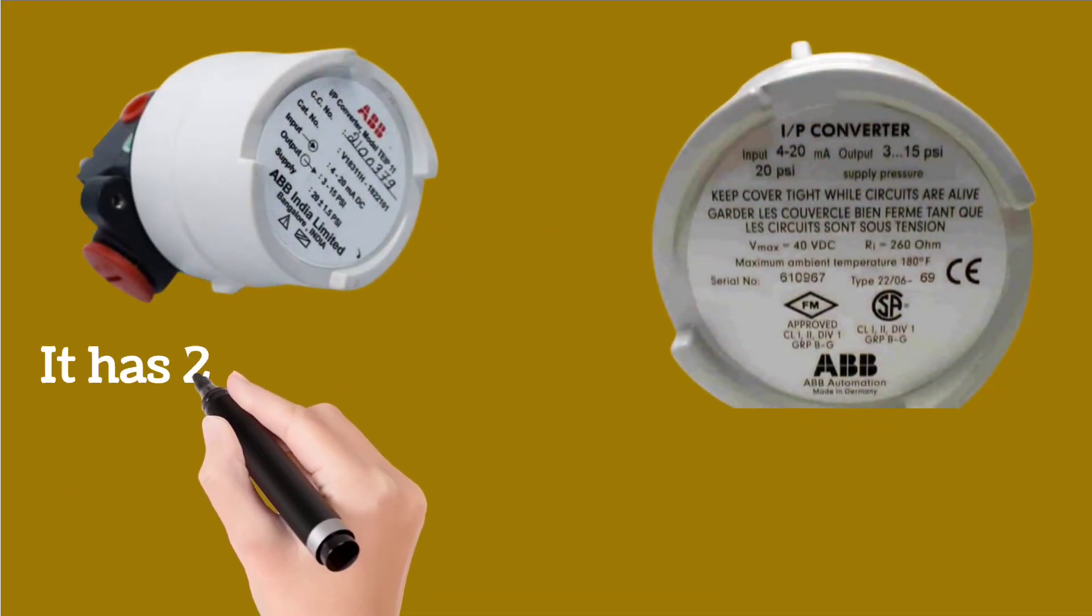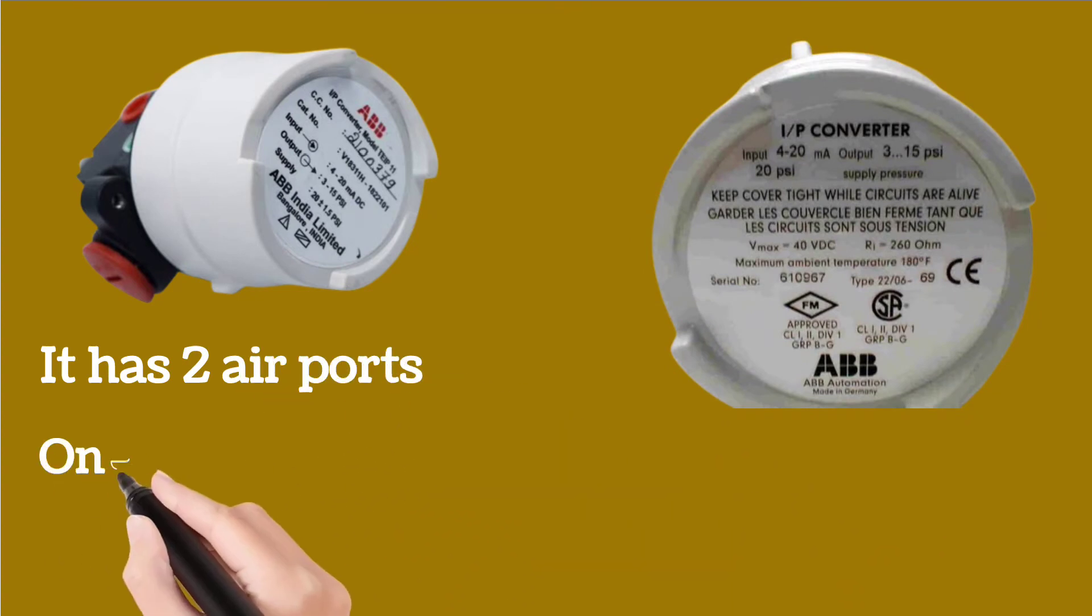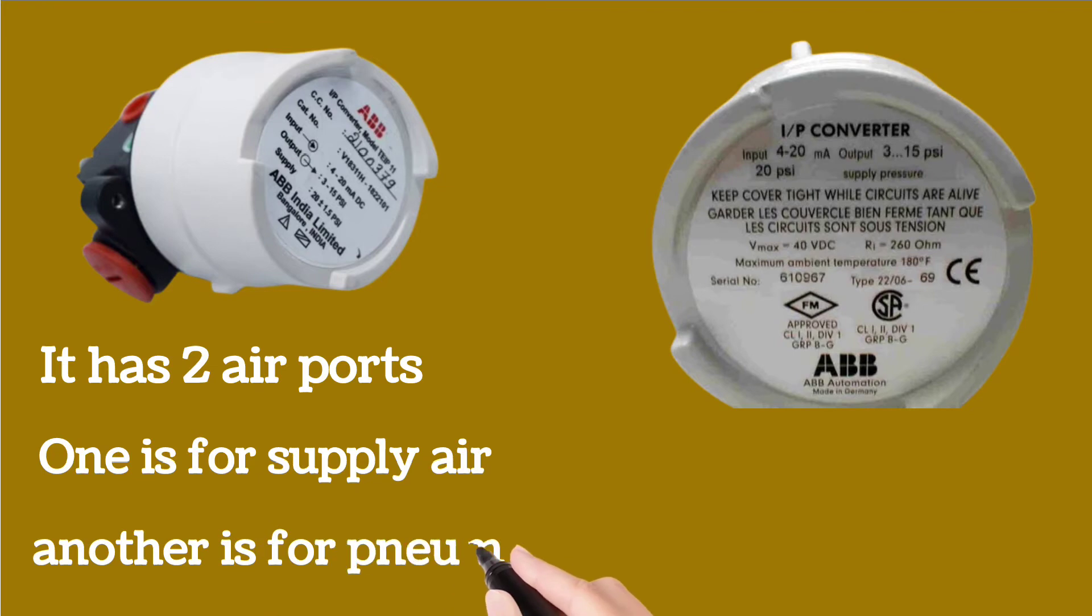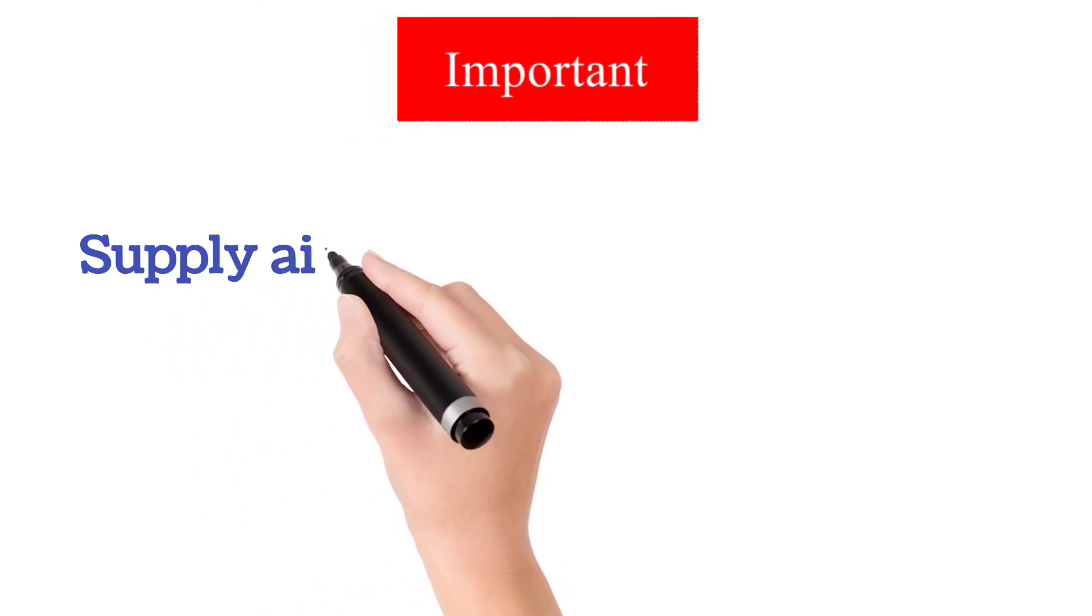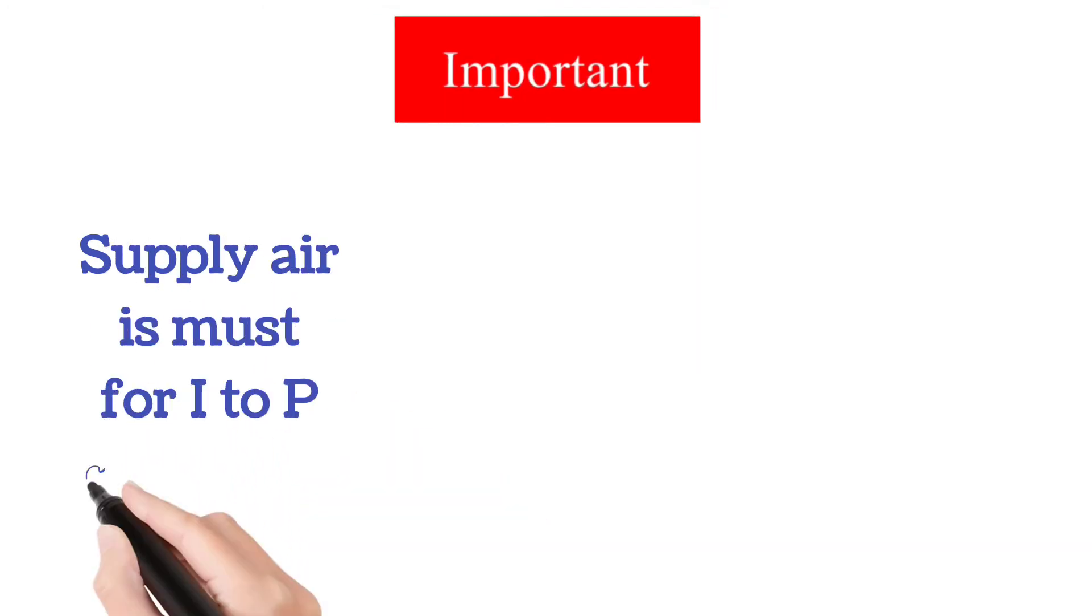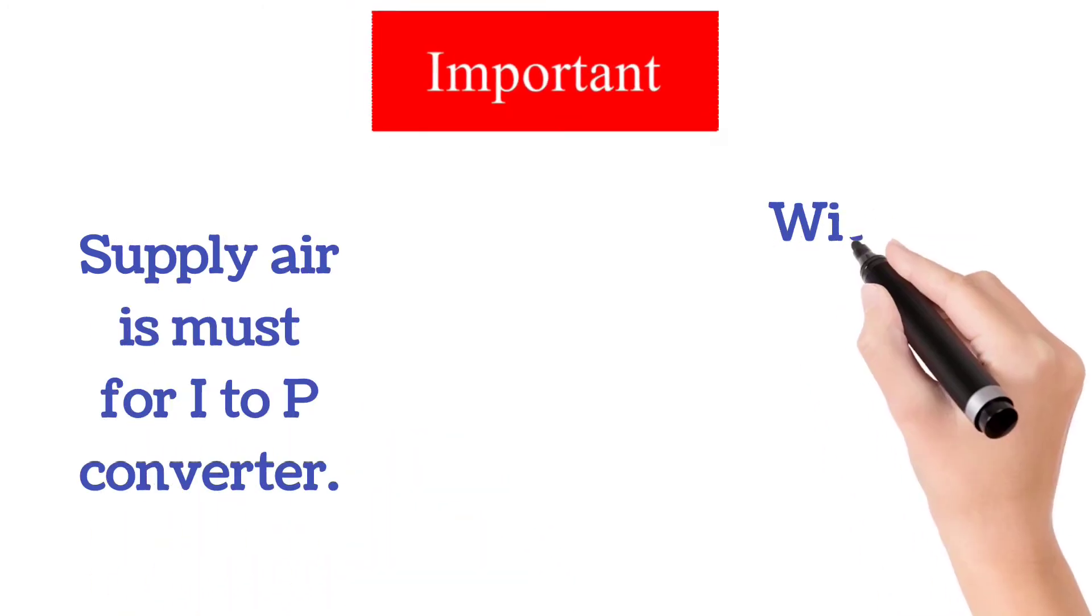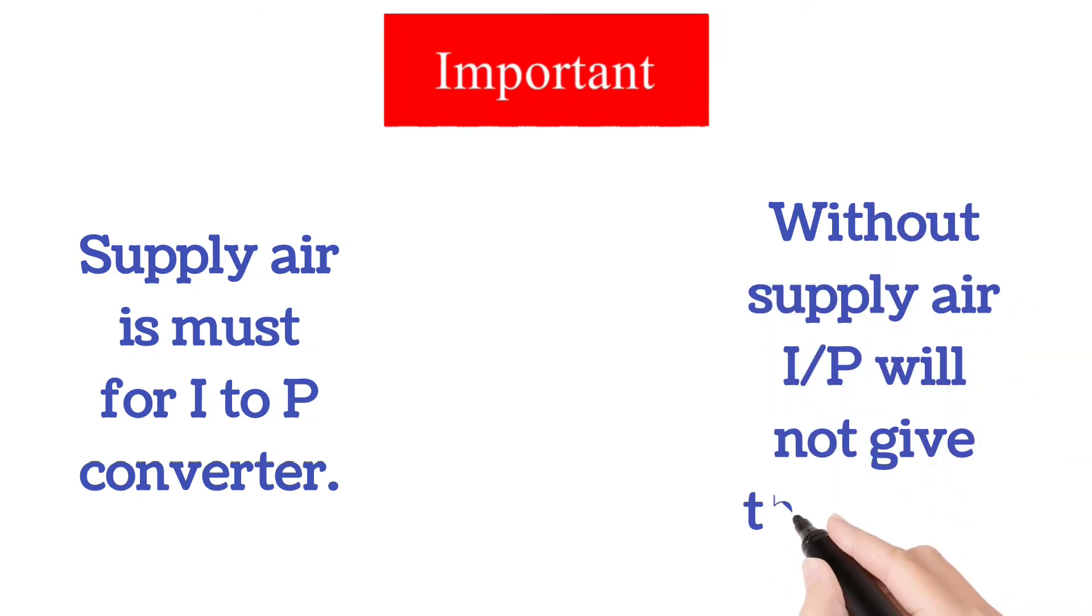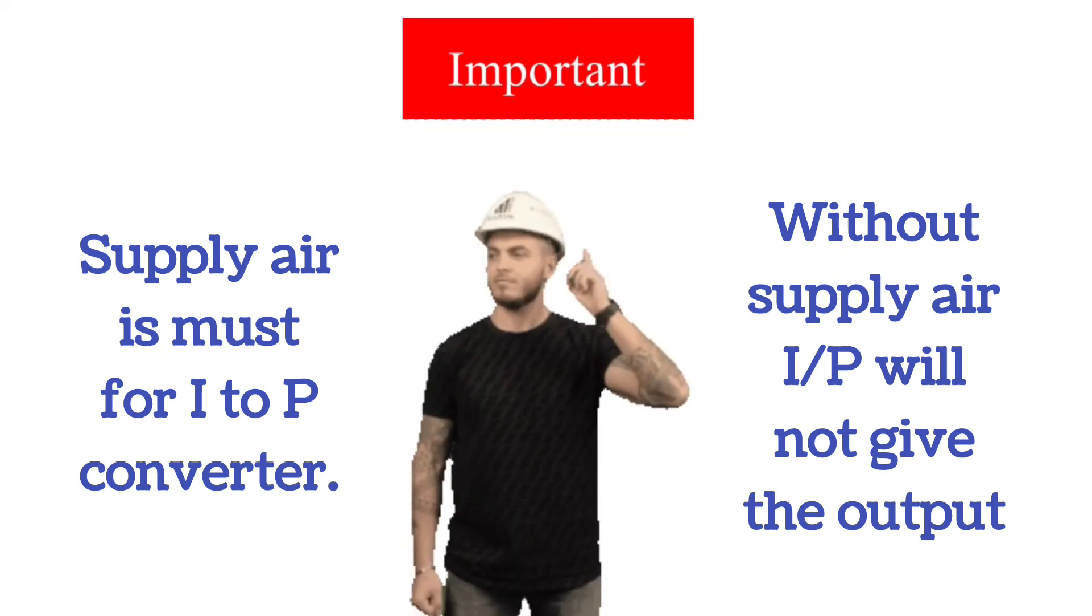I to P converter has two air ports. One is for supply air and another is for pneumatic valve positioner. Here one point is important to note that supply air is a must for I to P converter. And without air supply, it will not give output or it will not operate a control valve.